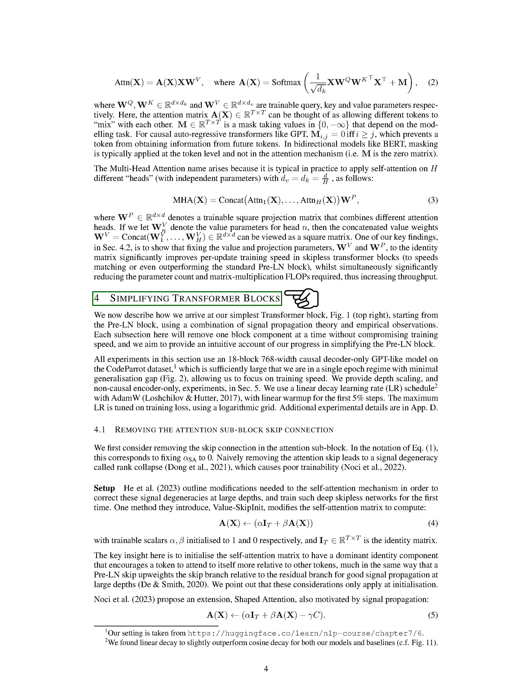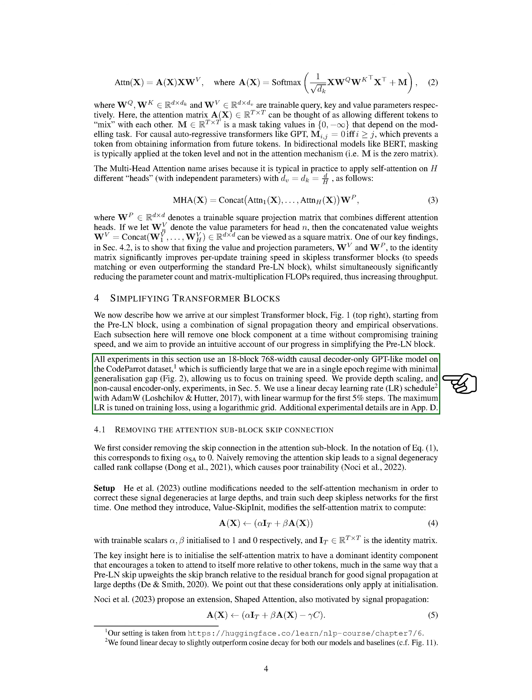In this section, we'll explain how we simplified the transformer block, starting from the pre-layer normalization, pre-LN, block. We used a mix of signal propagation theory and empirical observations to do this. We'll go through each step, removing one component at a time, without slowing down the training process. We conducted all our experiments using an 18-block, 768-width, decoder-only model similar to GPT, trained on the CodeParrot dataset. This dataset is large enough to allow us to focus on training speed, as we're in a single epoch regime with a minimal generalization gap.